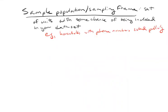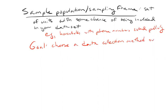So your goal when you're designing a study is partly to choose a sample population such that it is as similar as possible to the target population. One of the goals is to choose a data collection method such that the sample population is as similar as possible to the target population.